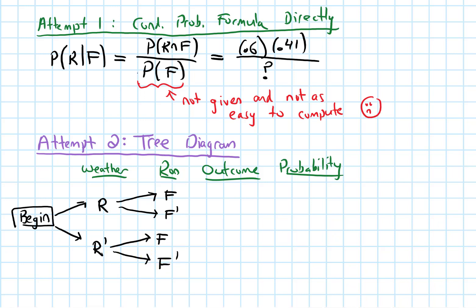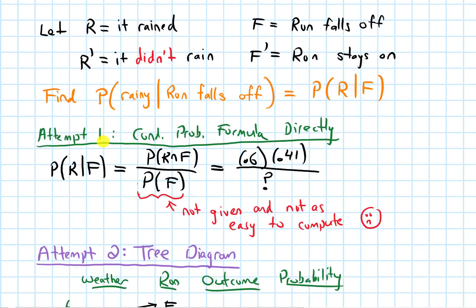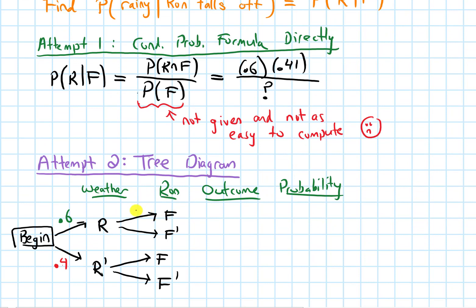The question said that there was a 60% chance that it rains, so 0.6 here. That means that it doesn't rain would be 0.4 because those two values have to add up to 1. On a rainy day, Ron falls off his broom 41% of the time. So on the R branch, we would go to F, 0.41. That means the value going to F prime would be 0.59 for them to add up to 1.